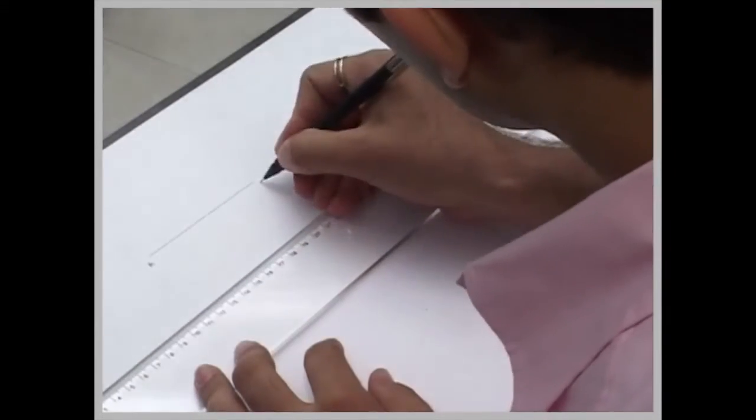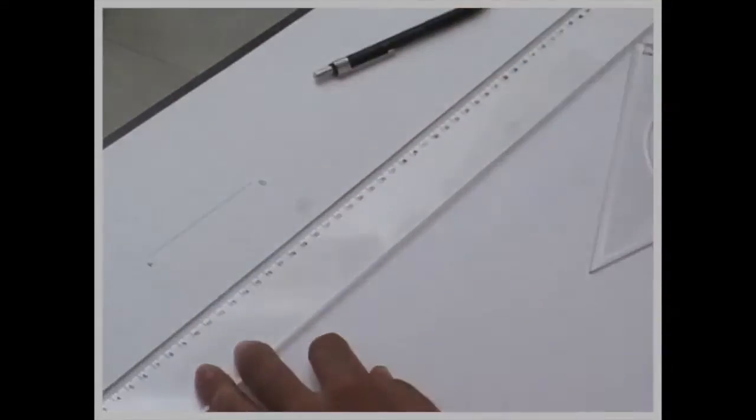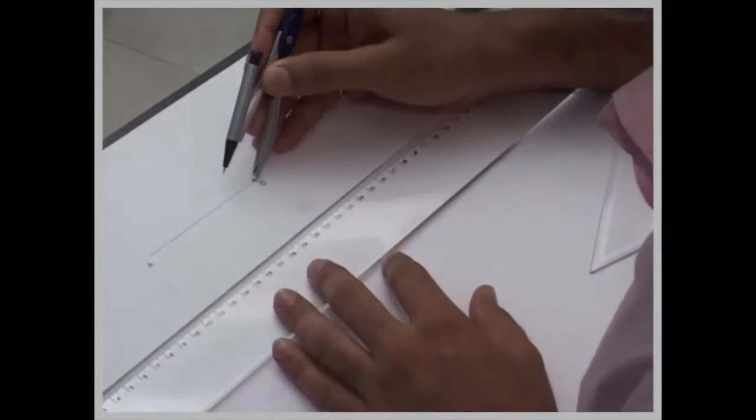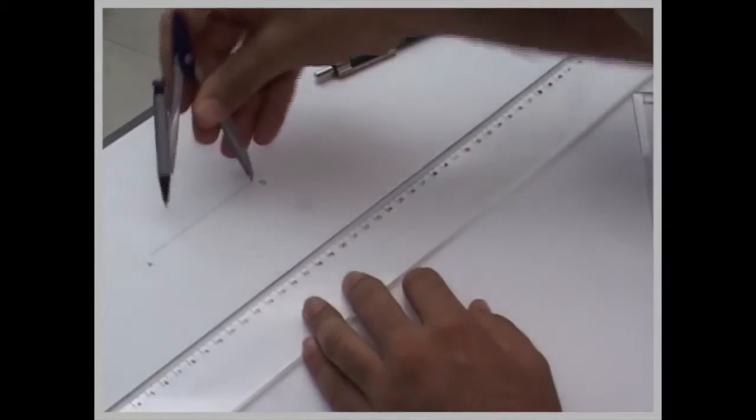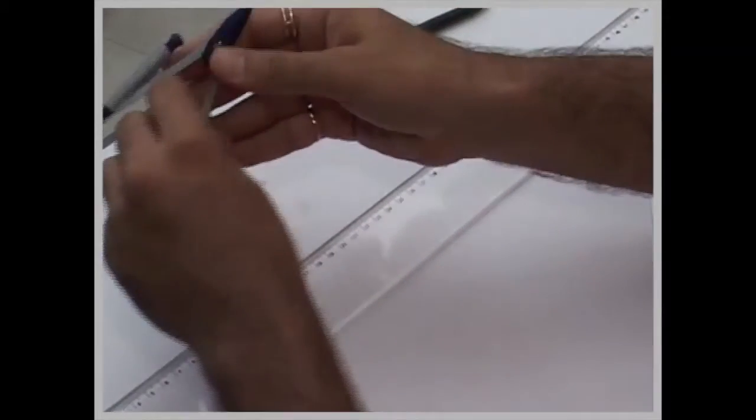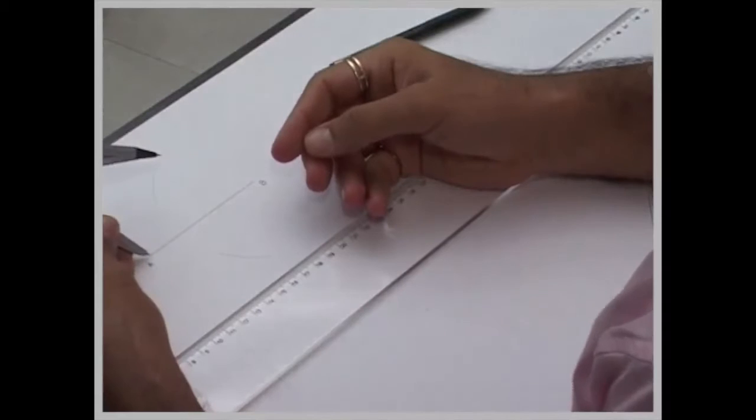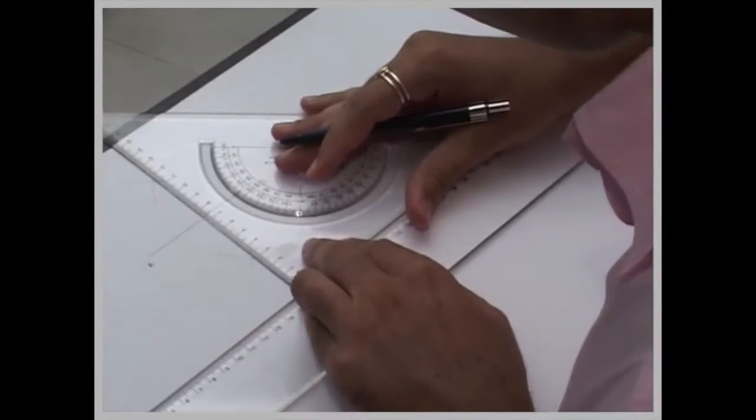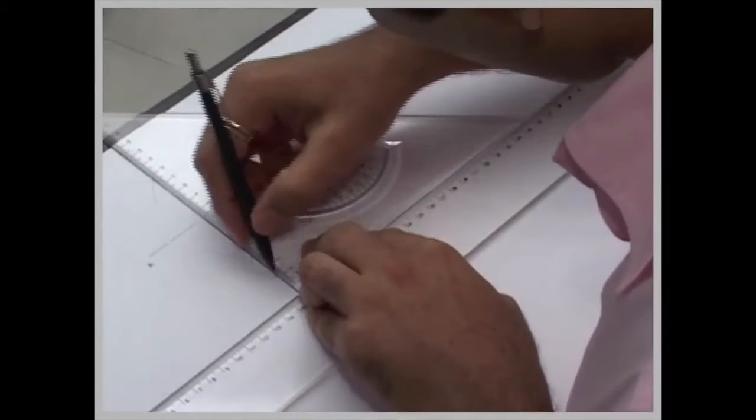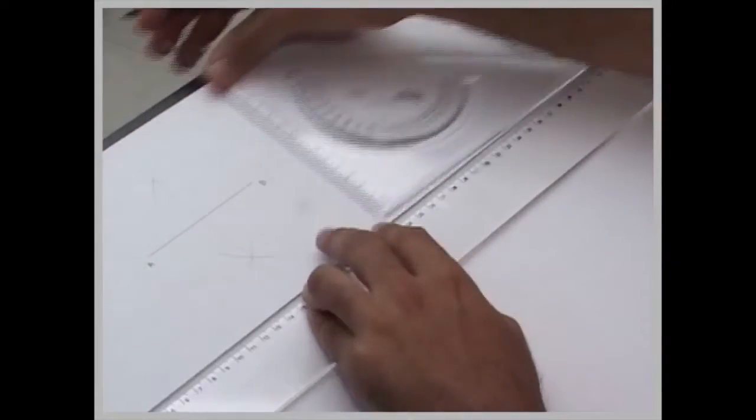I will take a compass from B. I will take more than half approximately and cut on both sides. Keeping the same radius from A, you cut on both sides and then draw a line.